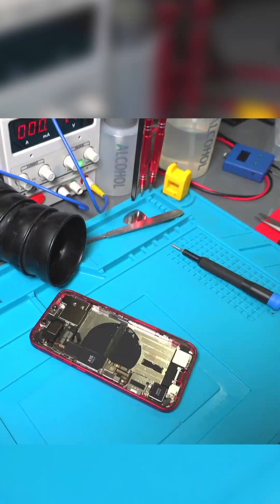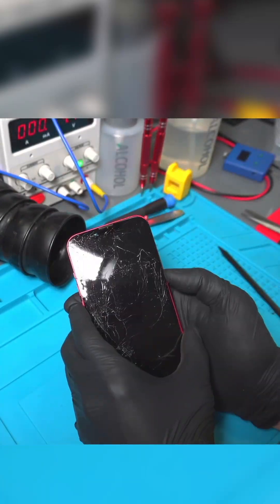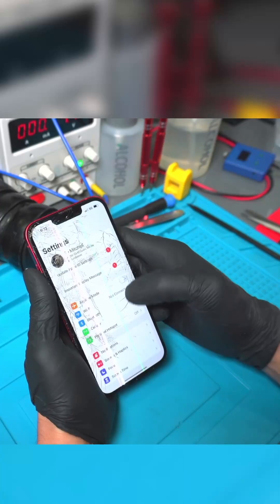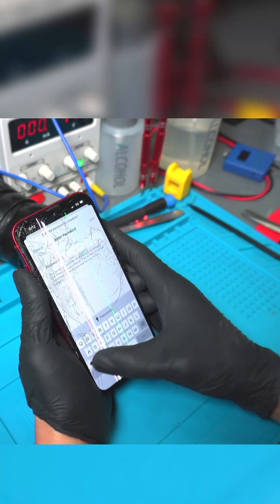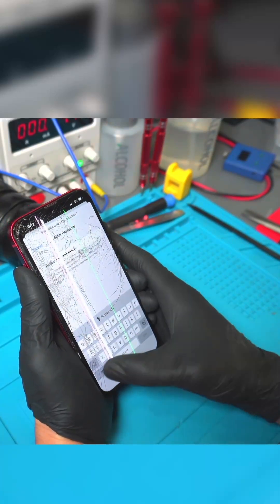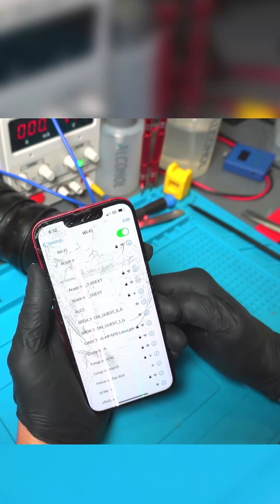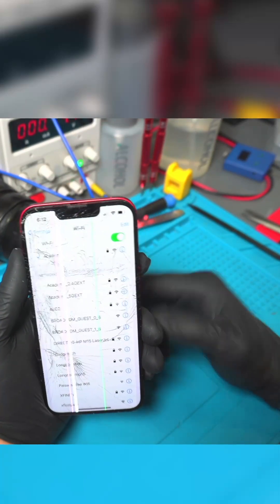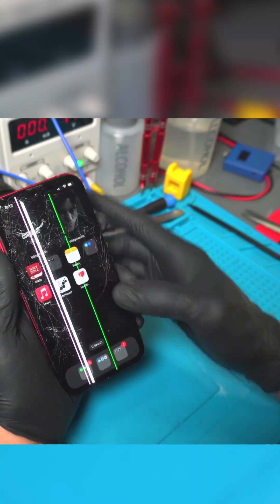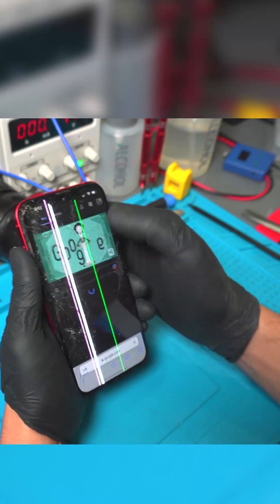Then we reassemble the phone and bench test it to see if it all looks good. And as you can see, it does populate many Wi-Fi connections. We are going to input the password to this connection to make sure it gets a strong signal. And yes, here it is. This repair has been successfully completed. Thanks for tuning in.